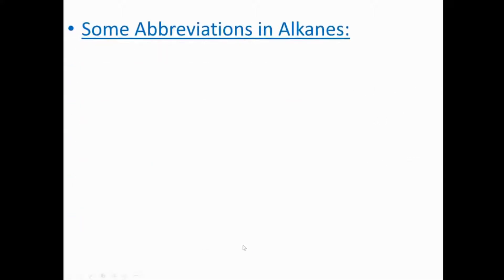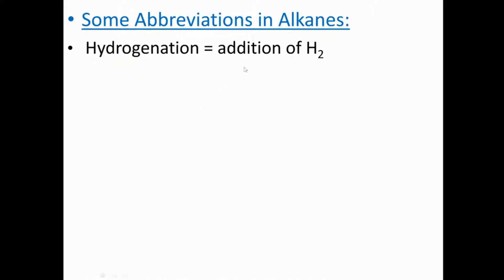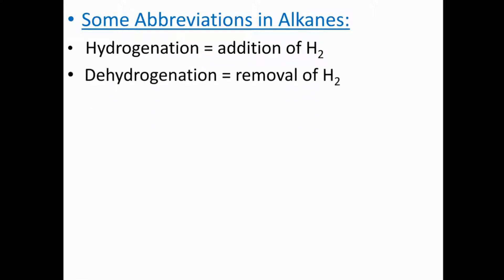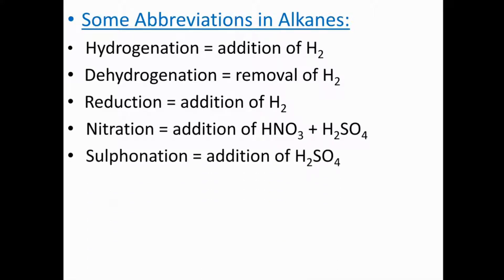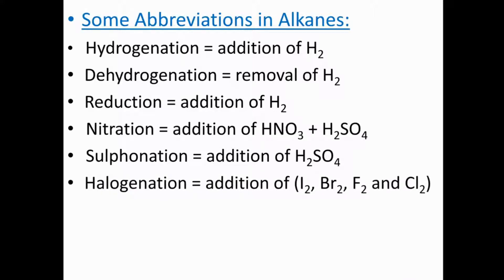Some abbreviations in alkane chemistry: hydrogenation means addition of H2; dehydrogenation is removal of H2; reduction is addition of hydrogen; nitration is addition of nitric acid plus sulfuric acid; sulfonation is addition of sulfuric acid; halogenation is addition of iodine, bromine, fluorine, or chlorine. These are abbreviations you might face when reading a textbook of organic chemistry.